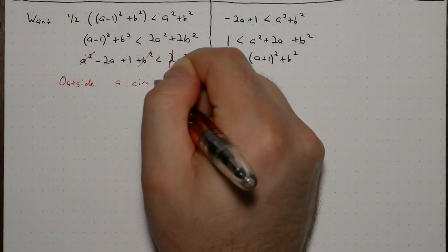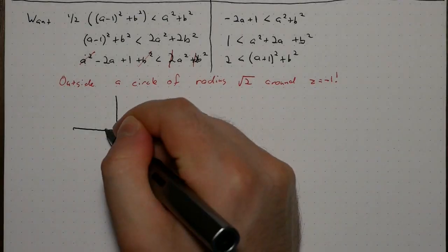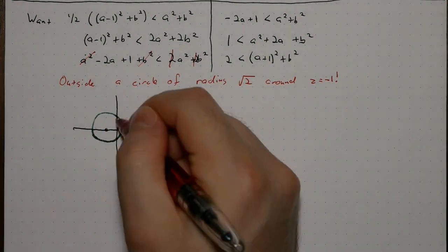This process works anywhere outside a circle of radius the square root of 2 centered at negative 1.